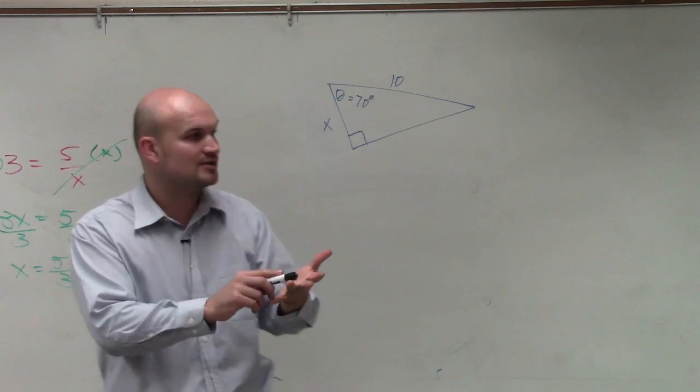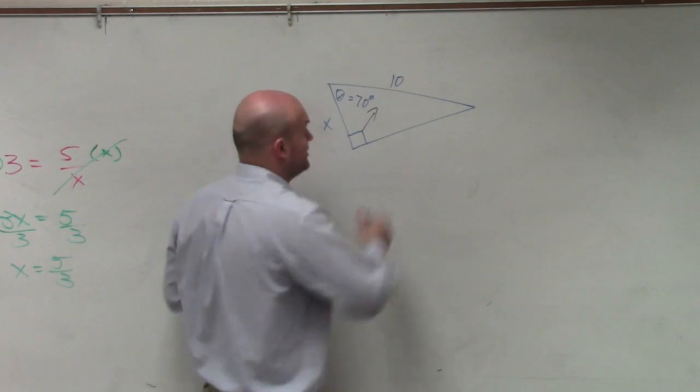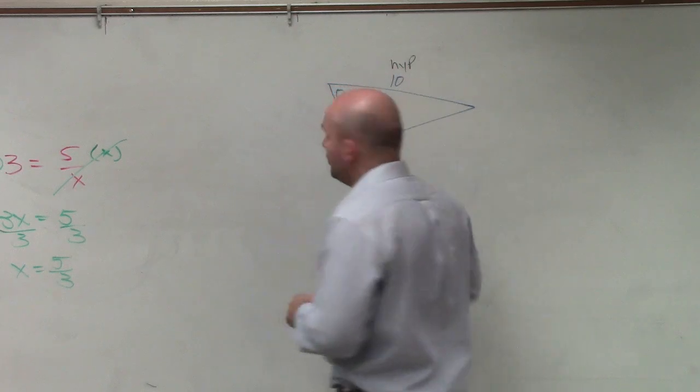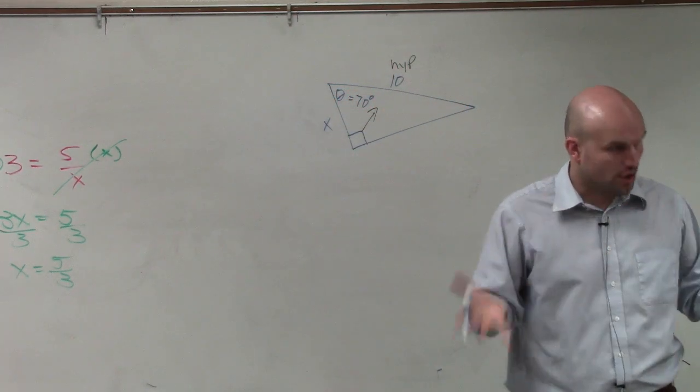Sine, cosine, or tangent. So to do that, the first thing I want to do is identify the hypotenuse, which hopefully you can see is always directly across from the right angle. Always.